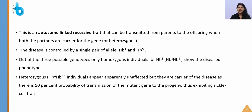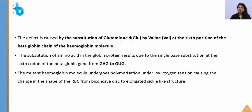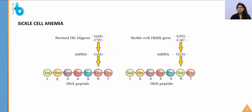The defect in sickle cell anemia is caused by substitution of glutamic acid by valine at the sixth position of the beta-globin chain of hemoglobin. In the DNA, CTG (coding for glutamic acid) is replaced by CAC, which codes for GUG in mRNA, ultimately coding for valine instead of glutamic acid. This small genetic defect changes the entire phenotype, resulting in sickle-shaped RBCs.